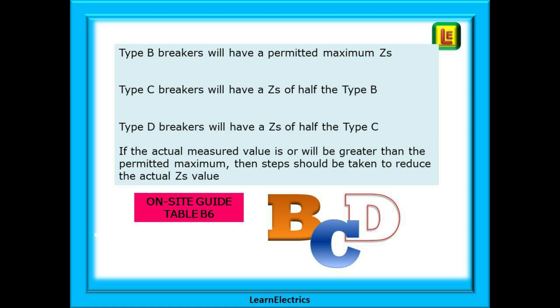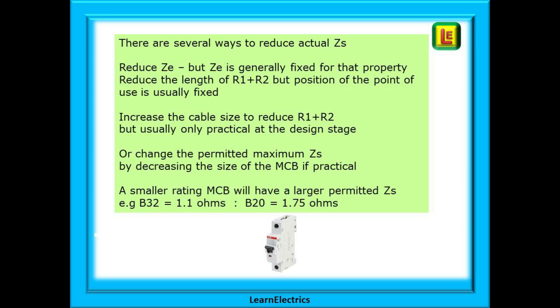If the actual measured value is or will be greater than the permitted maximum then steps should be taken to reduce the actual ZS value. Ideally we should calculate what the actual ZS would be at the design stage before we begin the installation. It is far easier to change circuit parameters before they are built and this is less costly too. There are several ways to reduce the actual ZS. Reduce ZE but ZE is generally fixed for that property. Reduce the length of R1 plus R2 but the position of the point of use is usually fixed. Increase the cable size to reduce R1 plus R2 but usually only practical at the design stage. Or change the permitted maximum ZS. A smaller rating circuit breaker will have a larger permitted ZS. For example B32 is 1.1 ohms but a B20 is 1.75 ohms.